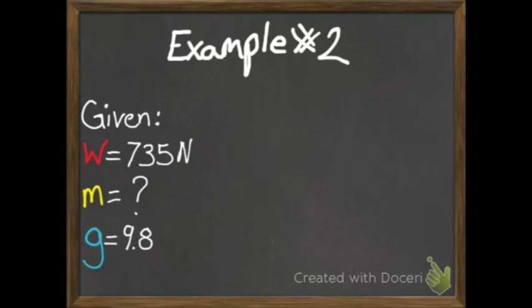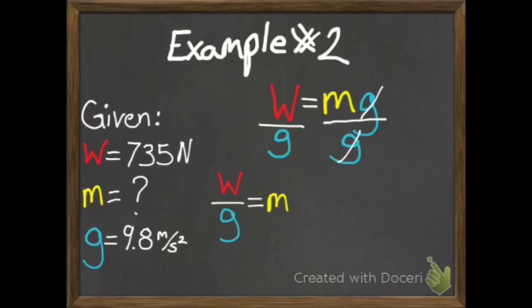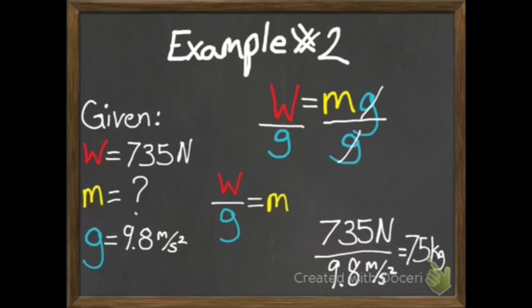Our given information: we know the weight is 735 newtons, we don't know the mass — that's what the question asked us — and we know the acceleration due to gravity is 9.8 meters per second squared. We've got W equals MG. Now, once you've figured out what equation to use, you need to solve for M, because M is the variable we don't know. In order to solve for M, we divide both sides by G. That cancels the G on the right side, giving us: W divided by G equals M. We plug in 735 newtons divided by 9.8 meters per second squared, and that gives us 75 kilograms. That is our mass.